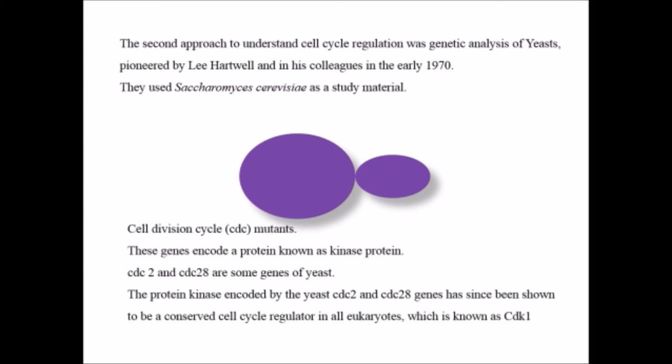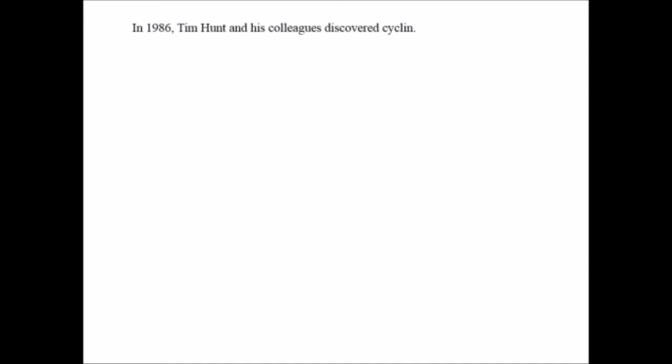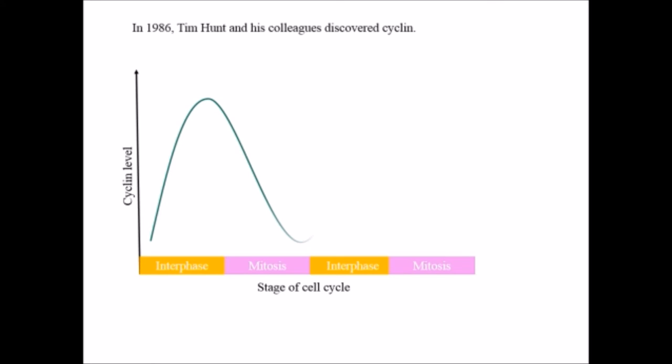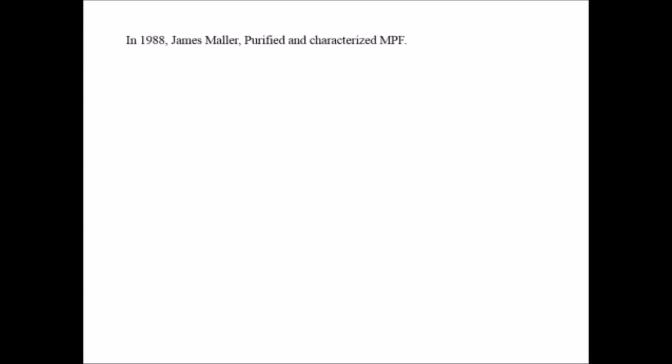The protein kinase which encodes the CDC2 and CDC28 genes has been seen to express a similar conserved sequence in case of eukaryotes, which is known as CDK1. In 1986, Tim Hunt and his colleagues discovered cyclin. What they have found: the cyclin, a certain protein which undergoes rapid increase and rapid decrease during the cell cycle. It undergoes rapid increase during the interphase and rapid fall down during the mitosis.